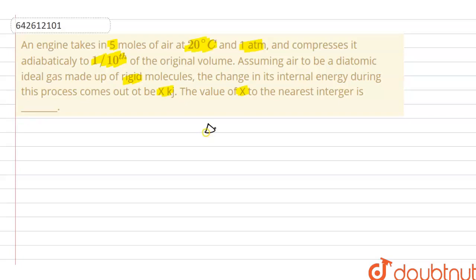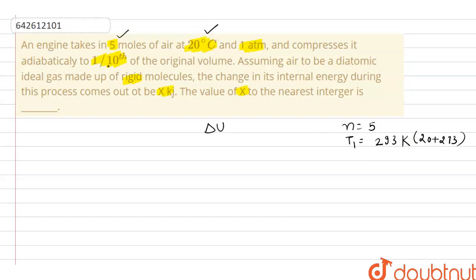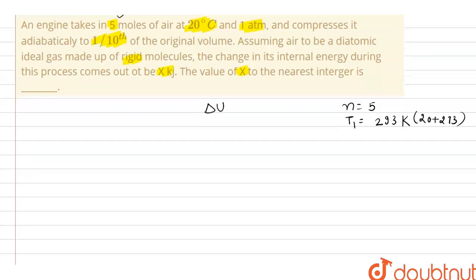We need to find the change in internal energy, that is delta U. We have n = 5 moles, and temperature T1 = 20 degrees Celsius, which we convert to SI units: 20 + 273 = 293 Kelvin. Pressure is 1 atm. Since the process is adiabatic, there is no heat exchange.